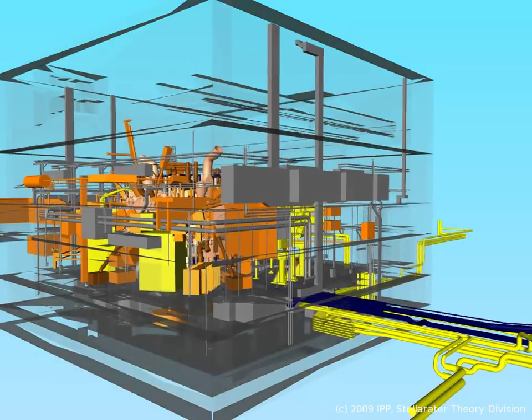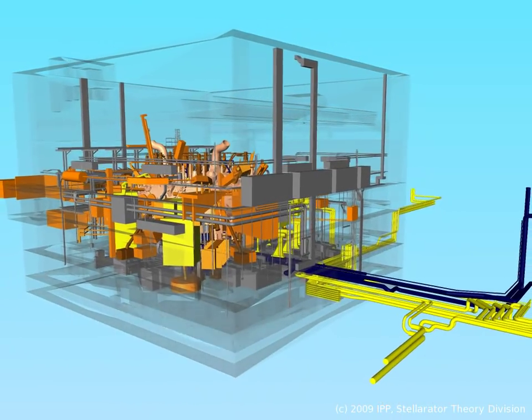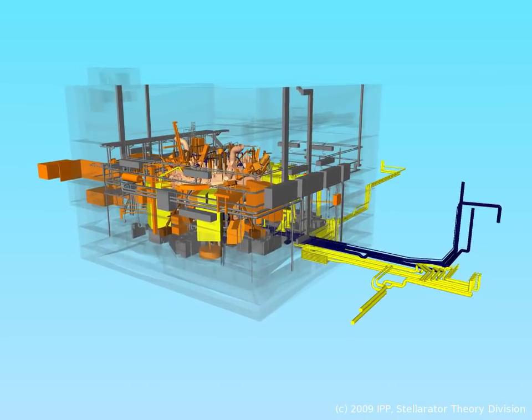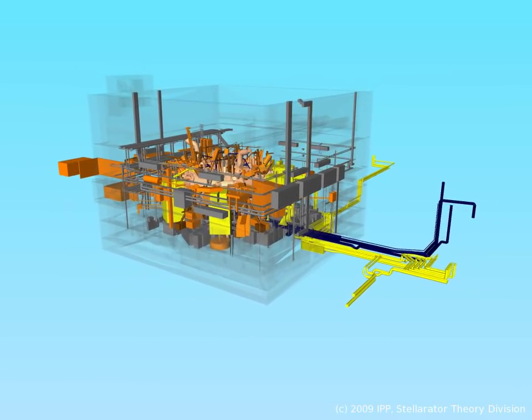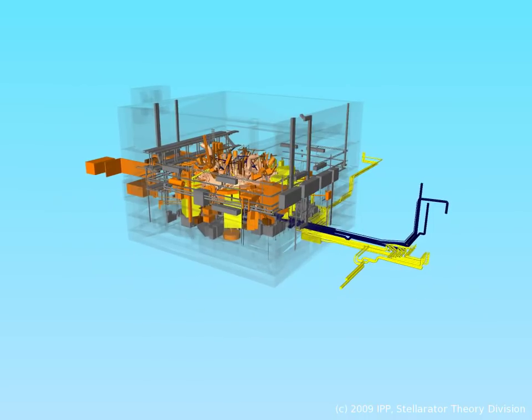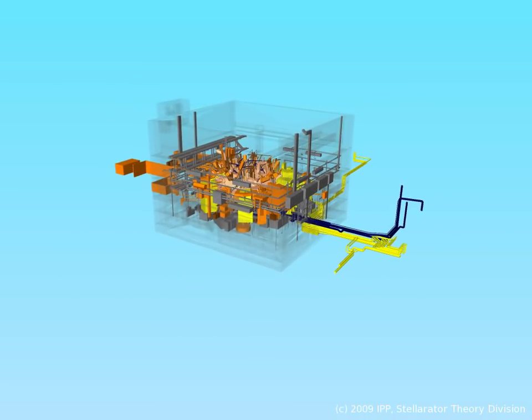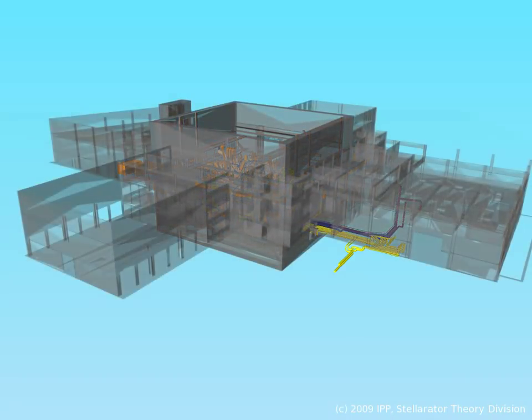The technical realization of a large optimized stellarator is far more complex than one would have expected given the apparent simplicity of the original idea. In the end, the device and its immediate infrastructure fill not only the entire torus hall, but extend throughout all the neighboring buildings as well.